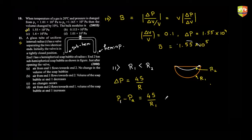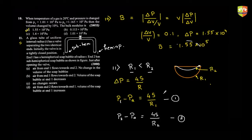My second equation is p2 minus pa equals 4s by r2. Now, which is more, p2 or p1? Since r1 is less than r2, p1 minus pa will be more than p2 minus pa. Hence p1 is greater than p2.